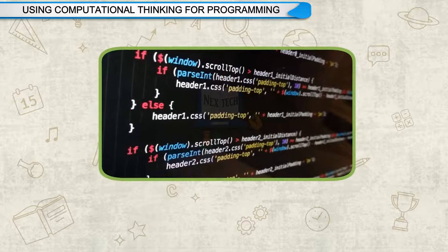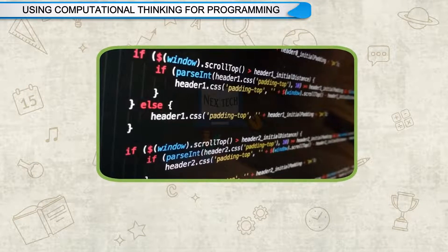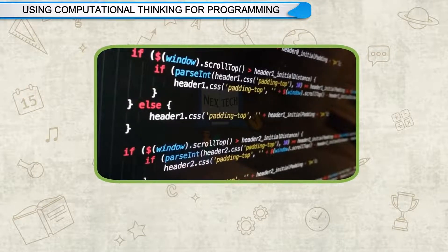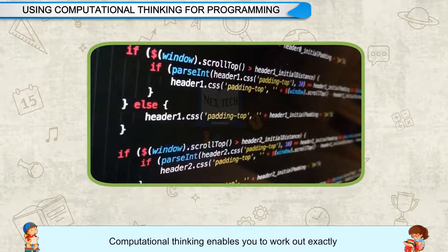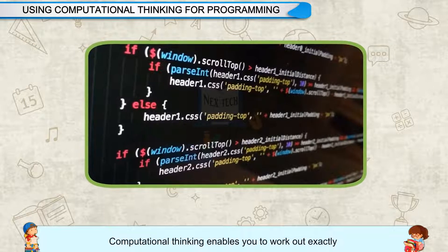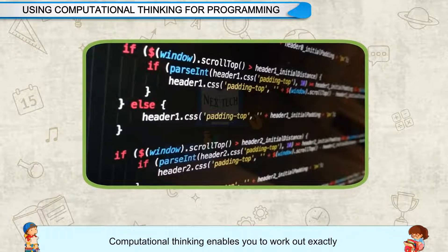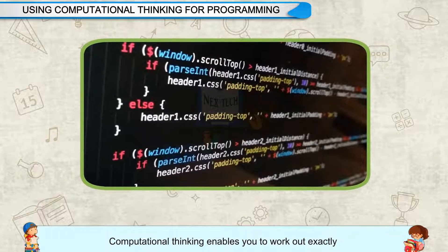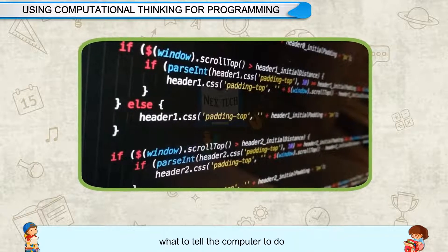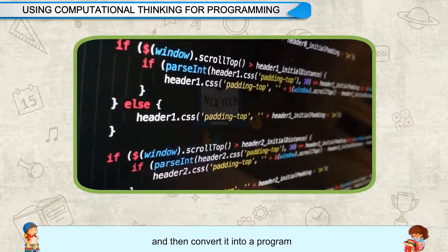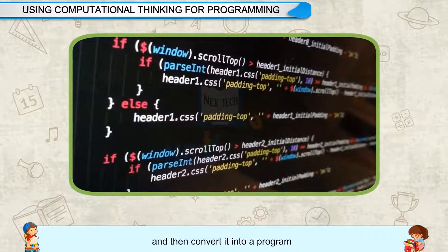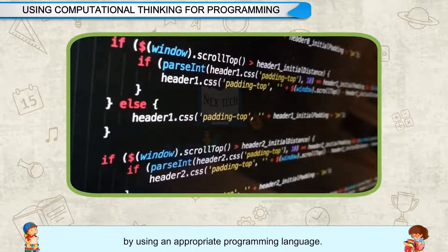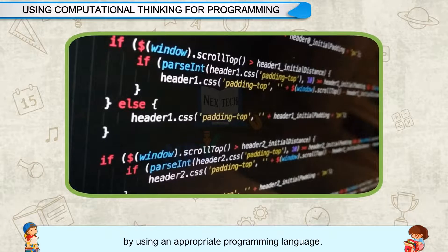Using Computational Thinking for programming: when you develop computer programs, computational thinking enables you to work out exactly what to tell the computer to do, and then convert it into a program using an appropriate programming language.